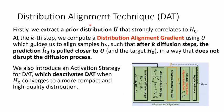Therefore, we developed DAT to infuse prior distribution information to the reverse mesh distribution diffusion process. Firstly, we extract a prior distribution U that strongly correlates with H0. Our prior distribution U is an extracted pose heat map, which contains rich semantic and uncertainty information. At the K step, we compute a distribution alignment gradient using U, which guides us to align samples such that after K diffusion steps, the prediction is pulled closer to U and also the target H0, in a way that does not disrupt the diffusion process. We also introduce an activation strategy for DAT, which deactivates DAT when HK converges to a more compact and high-quality distribution, as shown in the figure.